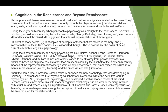Cognition in the Renaissance and beyond: Renaissance philosophers and theologians generally agreed that knowledge was located in the brain. They considered knowledge acquired not only through the physical senses — mundus sensibilis: touch, taste, smell, vision, and hearing — but also from divine sources — mundus intellectualis, deus. During the 18th century, British empiricists George Berkeley, David Hume, James Mill, and John Stuart Mill suggested that internal representation is of three types: direct sensory events; faint copies of percepts stored in memory; and transformations of these faint copies as in associated thought. These notions are the basis of much current research in cognitive psychology.